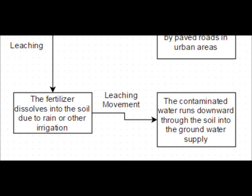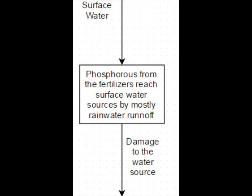Leaching is when fertilizer dissolves into the soil due to rain or other irrigation. This contaminated water drains downward through the soil and into the groundwater supply. On the other side, the contamination of surface water is rather simple. As stated before, rainwater runoff washes the chemicals from a lawn or field and into a nearby water supply. This is the main way that surface water is polluted.